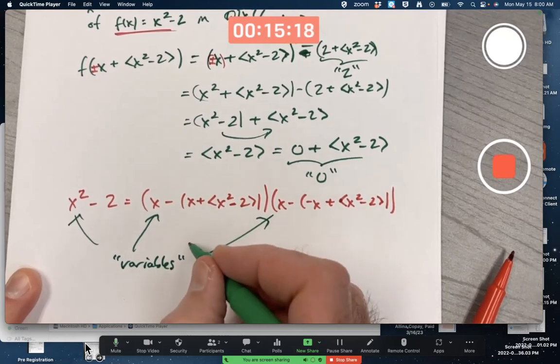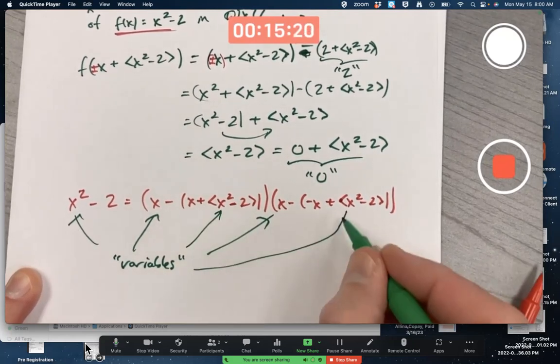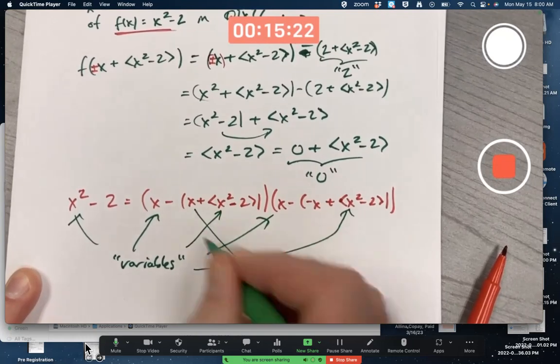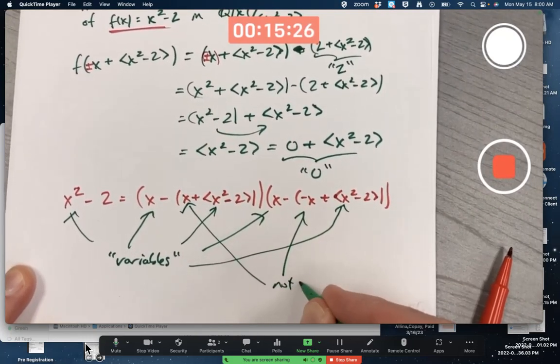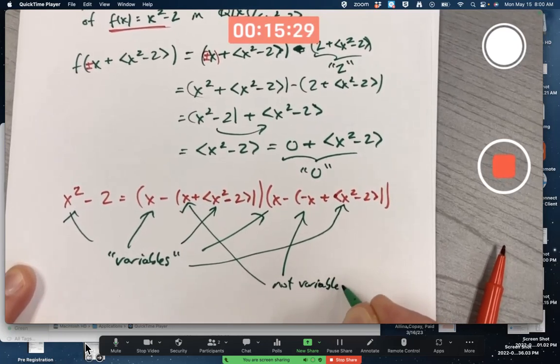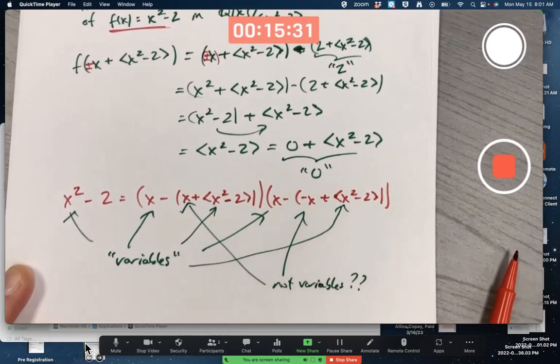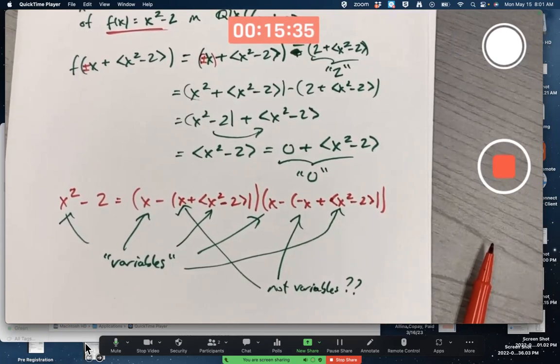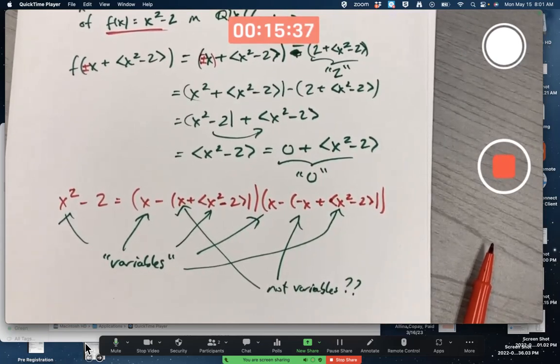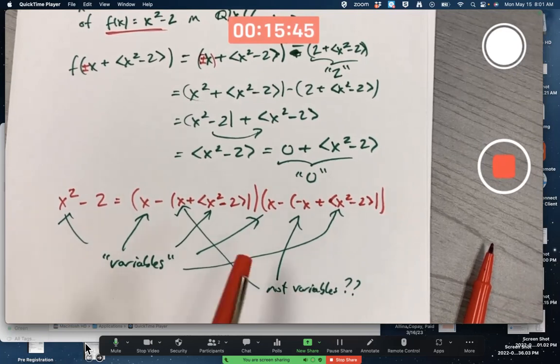Maybe you could even say these x's are variables as well, but these x's are not variables. Question mark, maybe? It's confusing because they're the representatives of these coset elements. So are they really variables or not? I don't want to make a big deal out of it, but that's a way you could think of it.